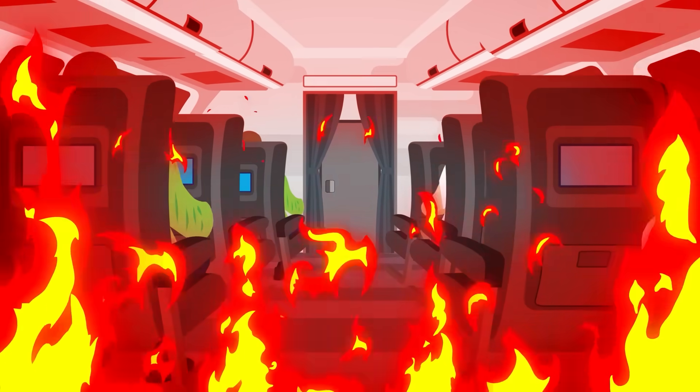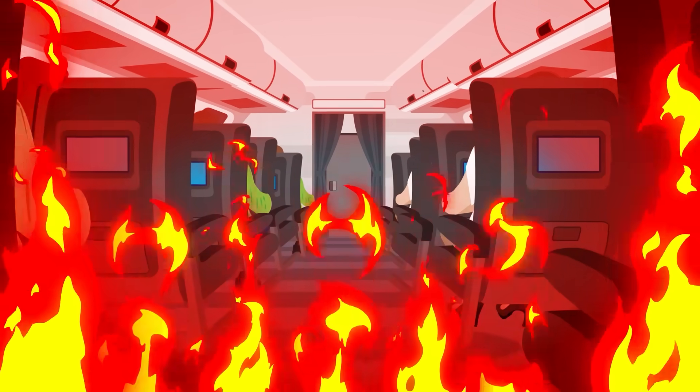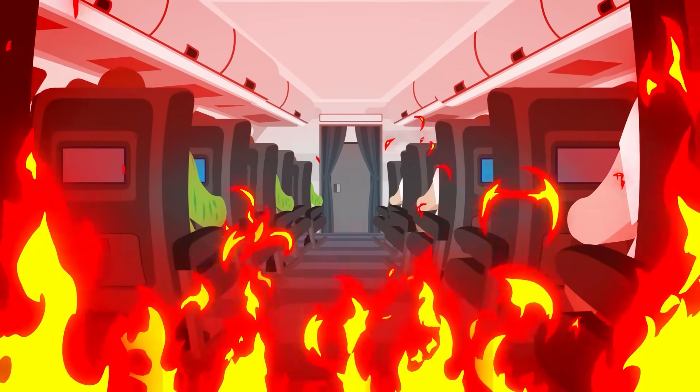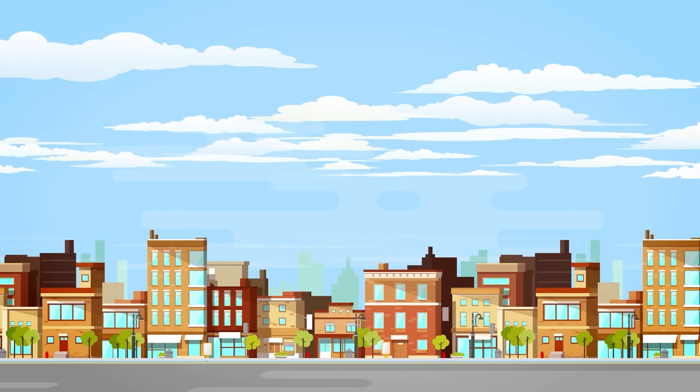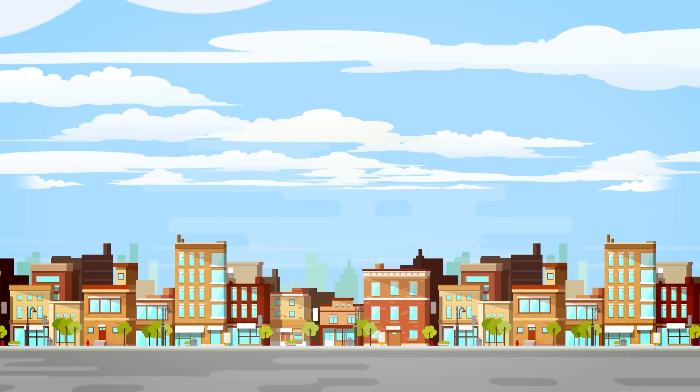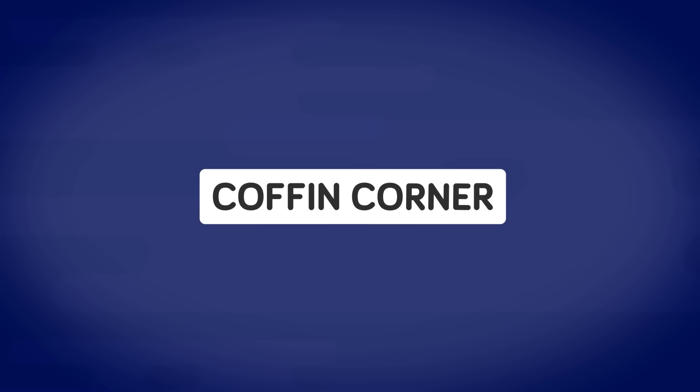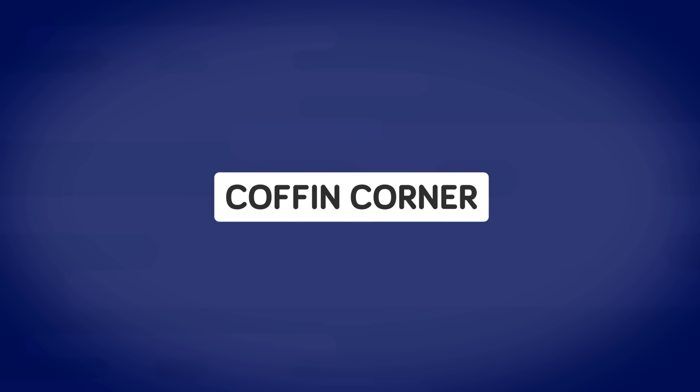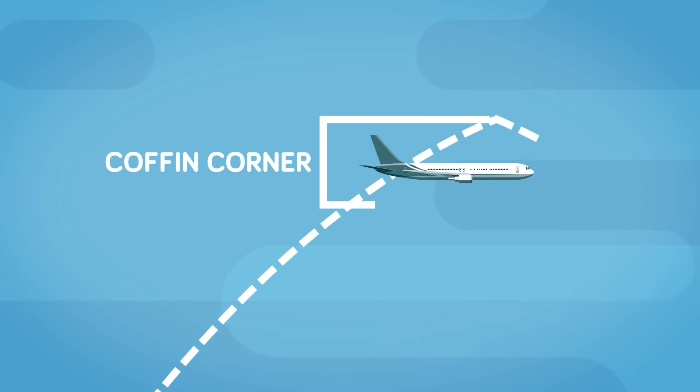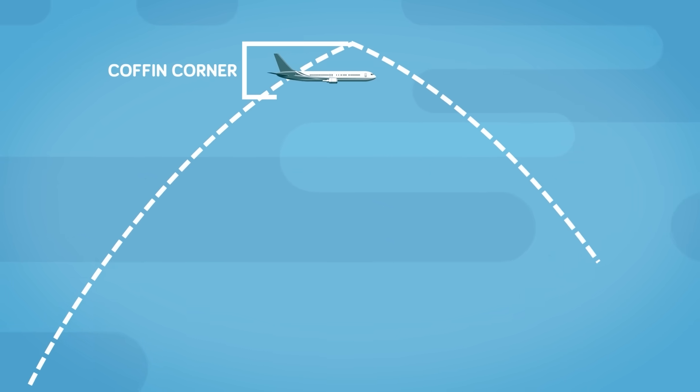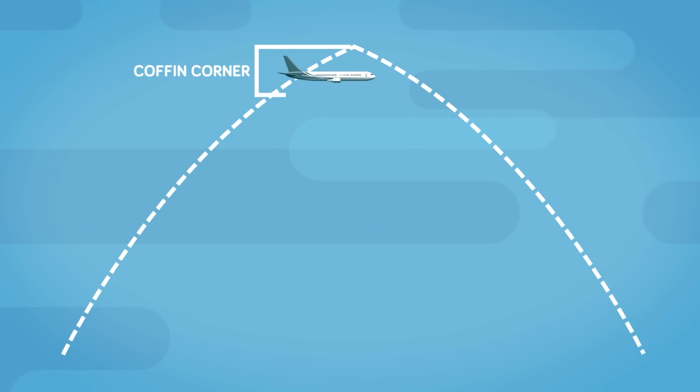Another obstacle standing between an ordinary commercial plane and space travel is the quality of air closer to space. The higher you go, the thinner the air becomes. At high enough altitude, the air becomes too thin for the plane to maintain its lift. At this point, the plane reaches something ominously called a coffin corner, in which it can no longer speed up, slow down, or climb any higher. The only way to keep the aircraft from crashing once in the coffin corner is by reducing its altitude while carefully gaining speed during a controlled descent.